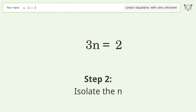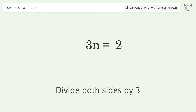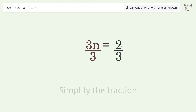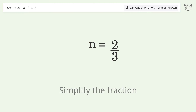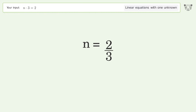Isolate the n — divide both sides by 3. Simplify the fraction. And so the final result is n equals 2 over 3.